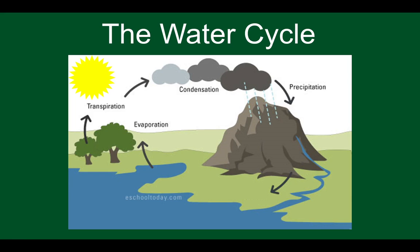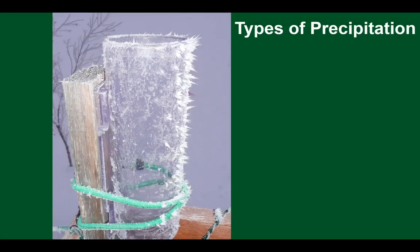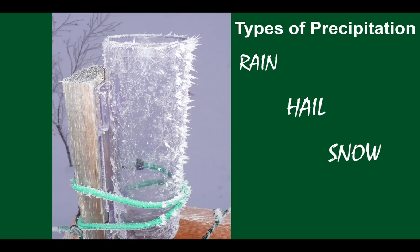Yes — precipitation! For fun, can you name one type of precipitation — one thing that falls out of clouds? The answers are rain, hail, snow, and the final one that is often forgotten: sleet, which is a mixture of rain and snow at the same time. The picture shown here is actually ice crystals that have condensed on the outside of a rain gauge.